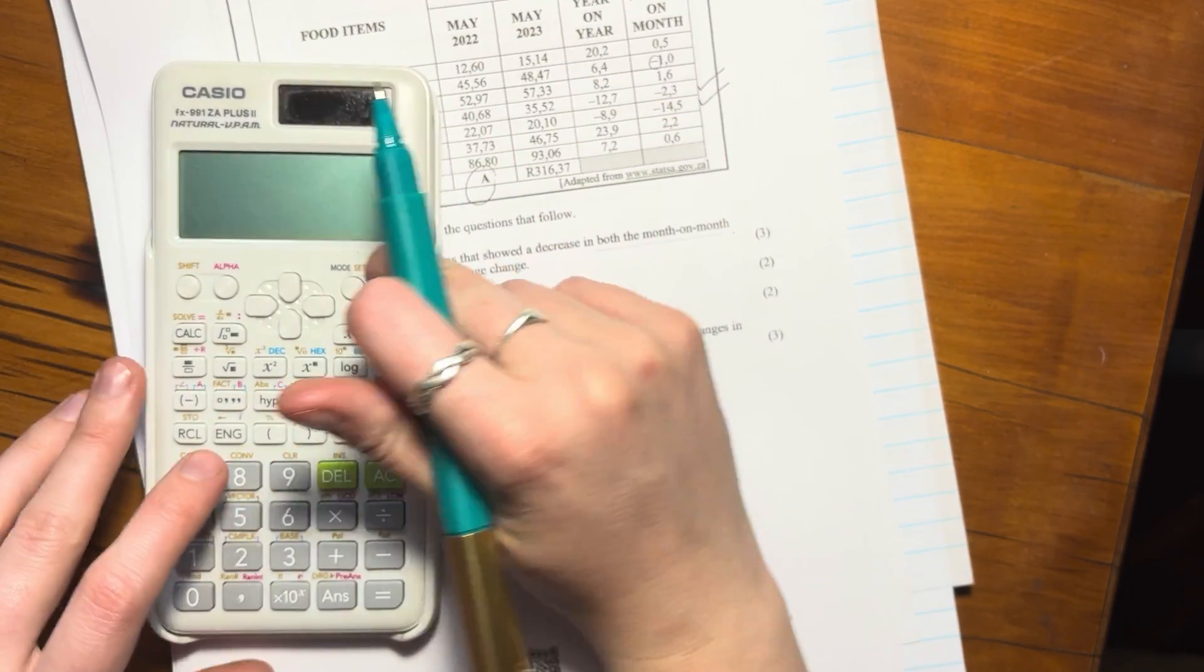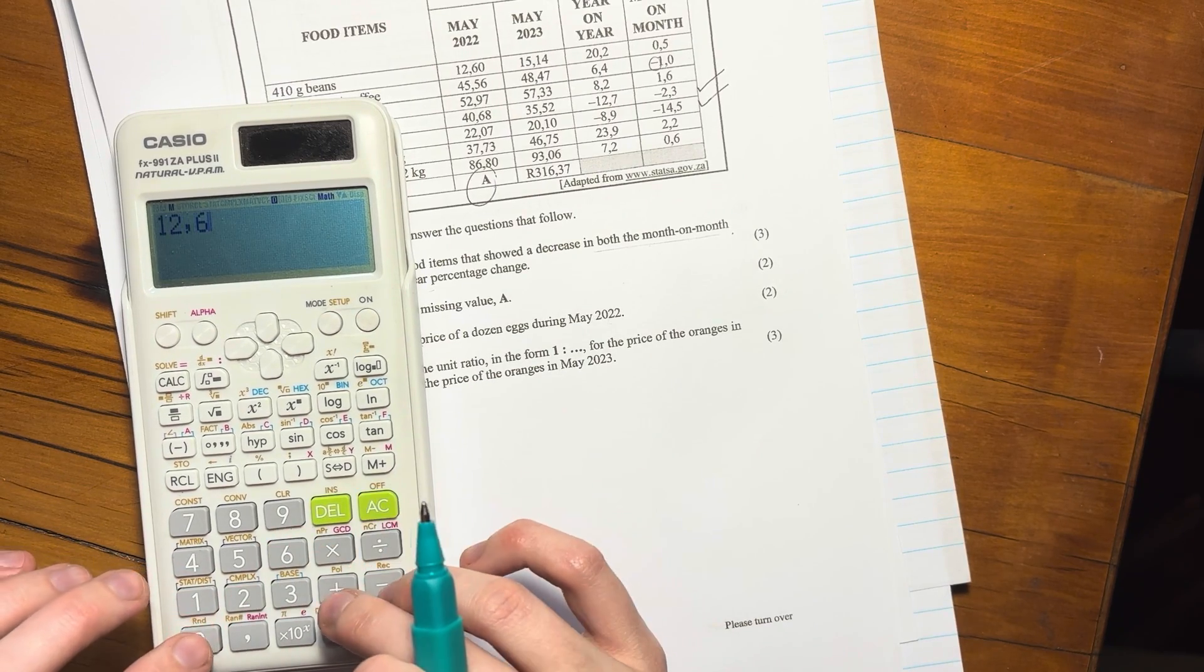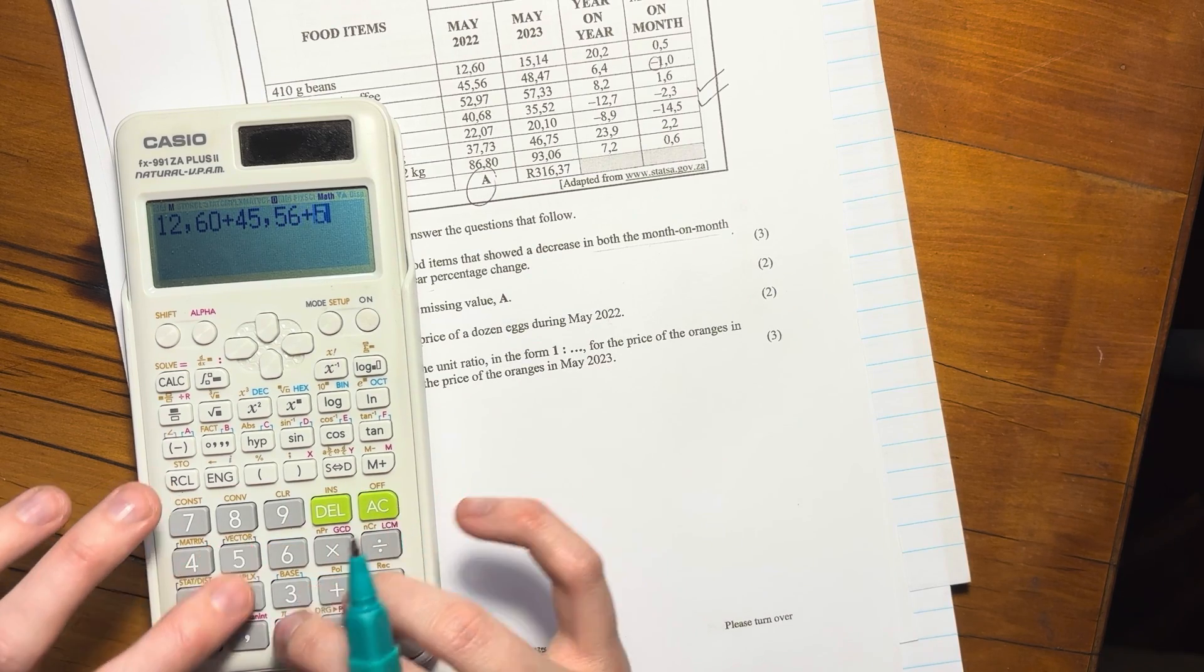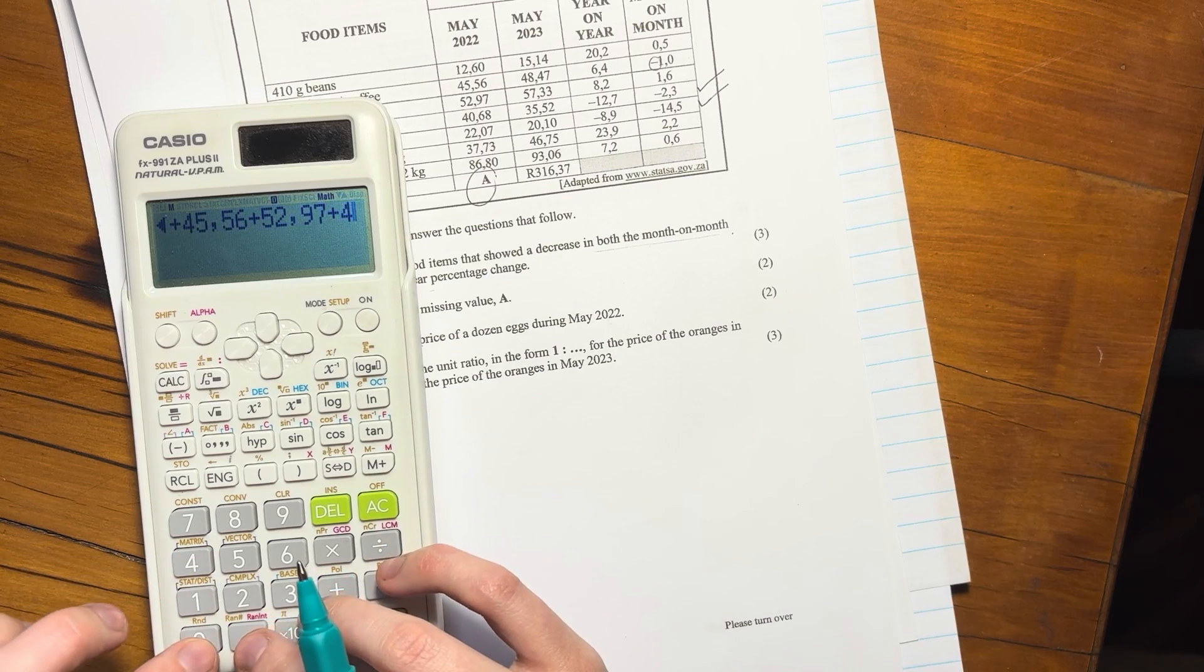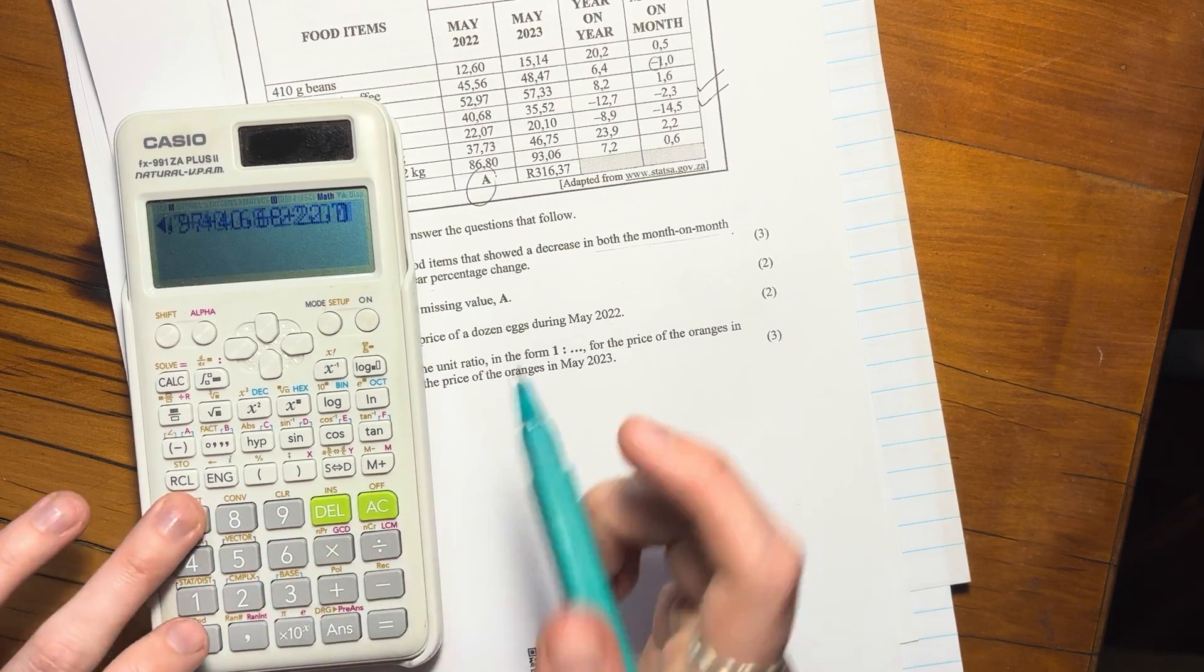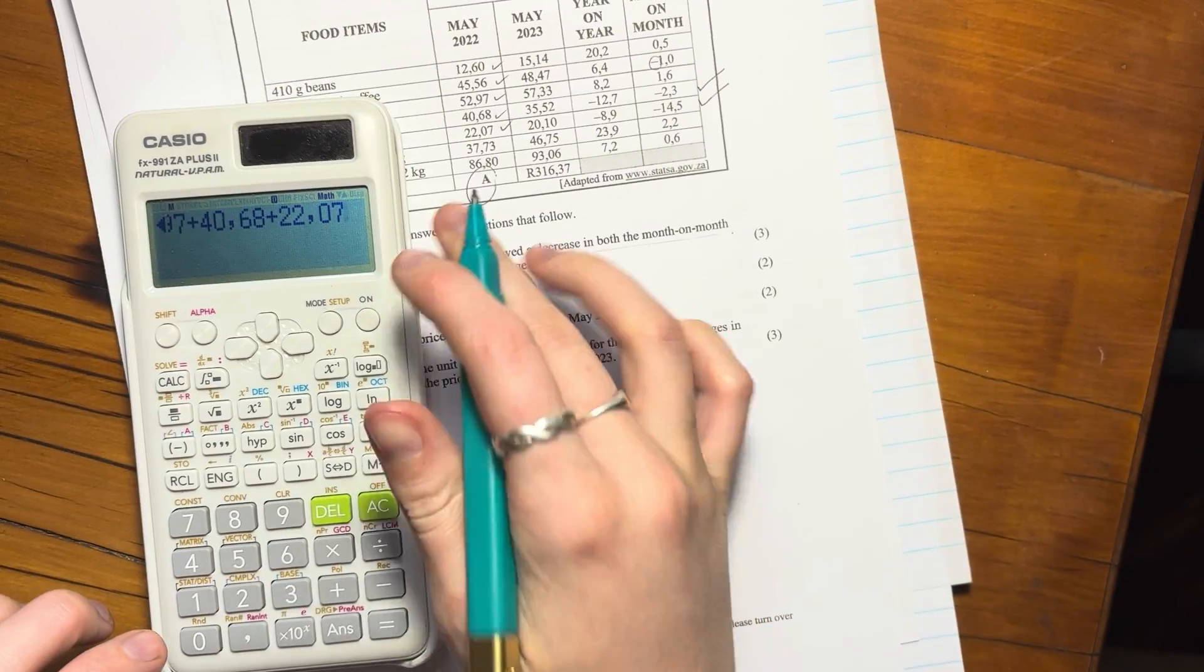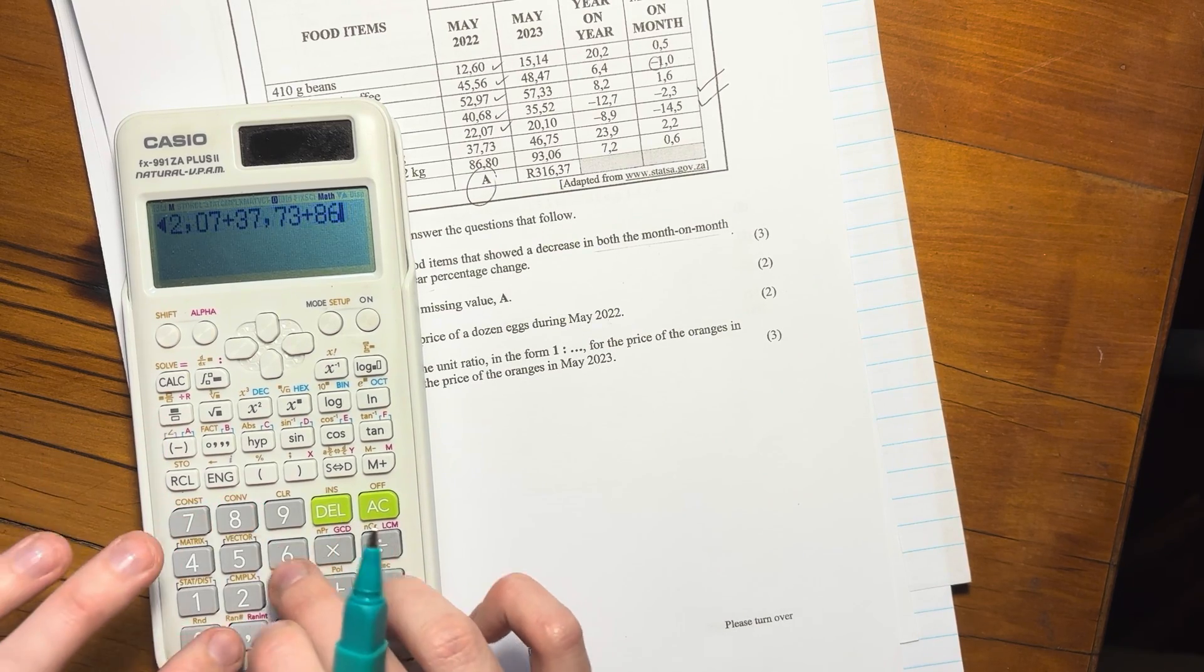So over here for A, what we're going to do is we're just going to sum all of those together. So we're going to take out our trusted calculator and I'm really typing things in wrong. The biggest thing here that I always say to my students is making sure that you type in questions correctly. When I say questions, I mean numbers. I'm just working down this column.